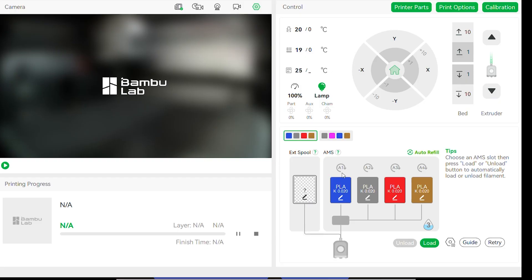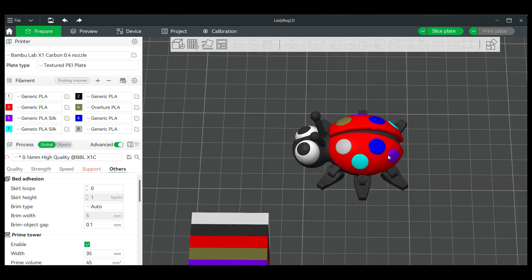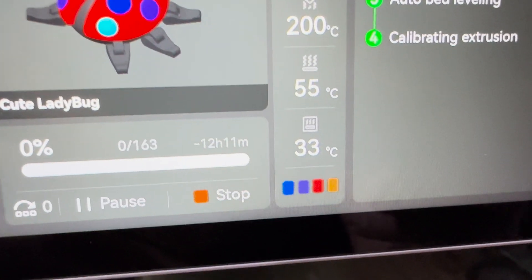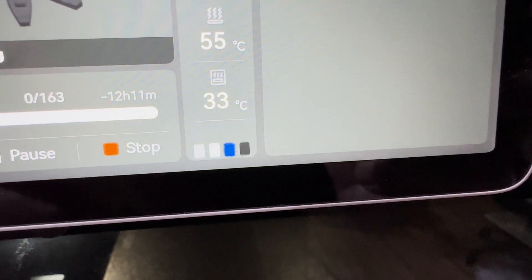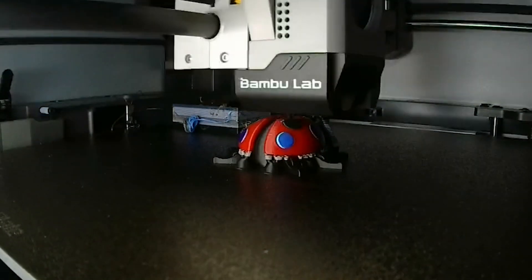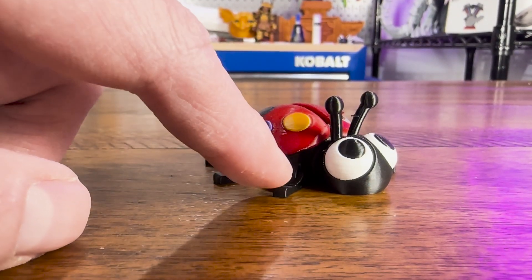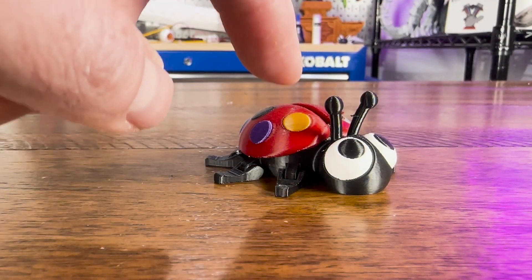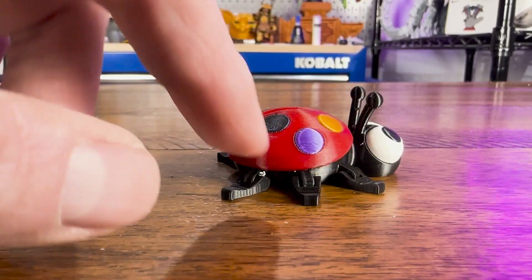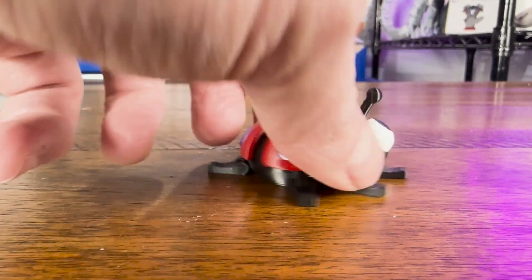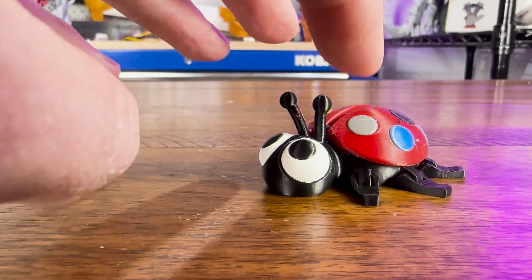Now let's paint this little ladybug's spots in different color filament. As you can see here, the X1 Carbon is using both AMSs. Look how cool this little ladybug came out. We have white, black, red, gold, purple, dark gray, blue, and light gray.